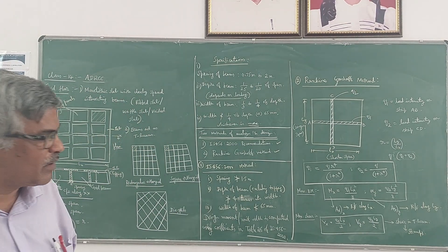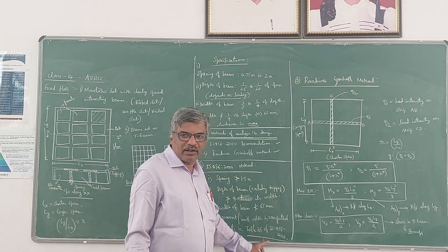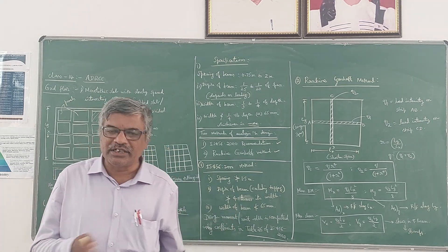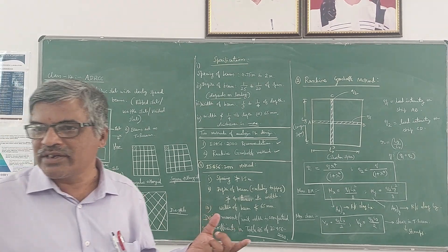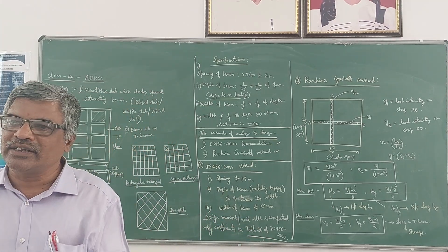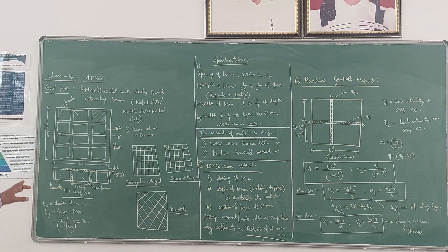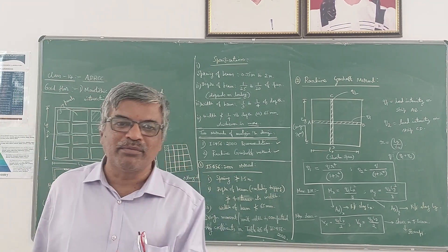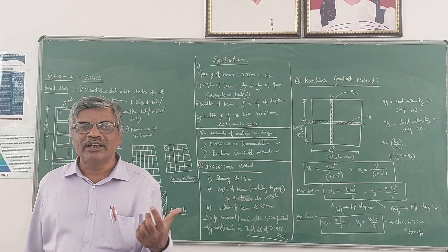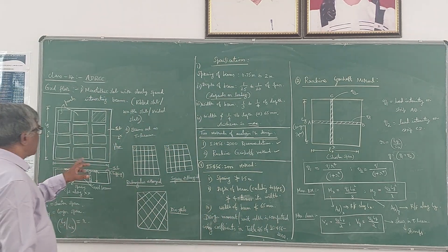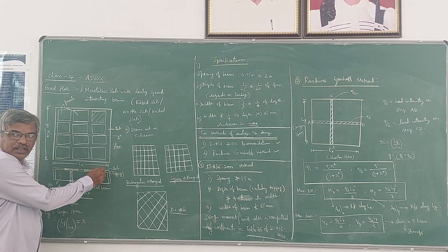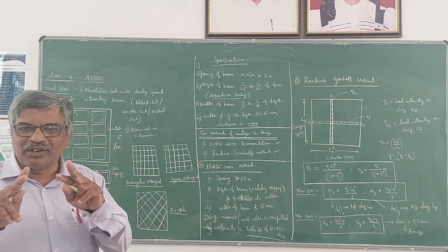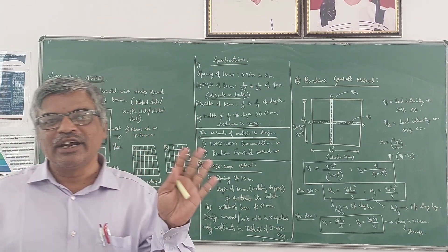Once you get the moment and shear values, you calculate the reinforcement. You need to calculate reinforcement in two directions — along the shorter span and along the longer span. For a grid floor, there are two components: one is the slab design (reinforcement for the top slab) and another is the beam design (reinforcement for the T-beams).